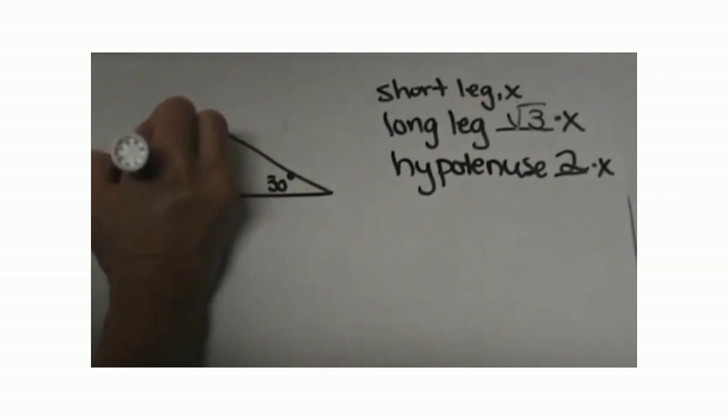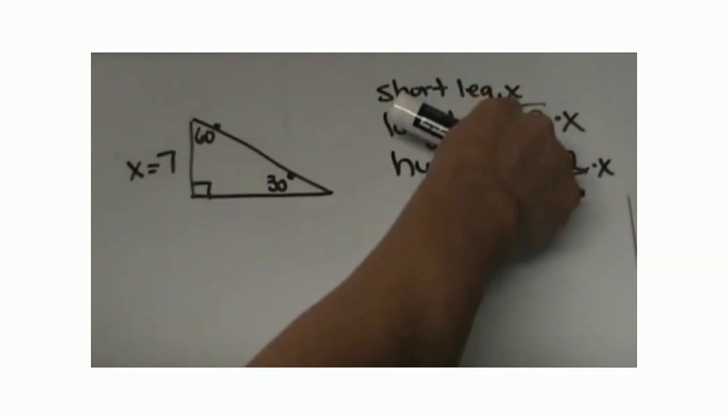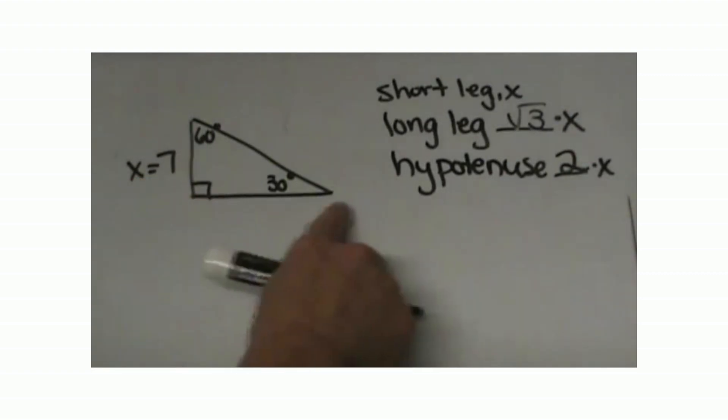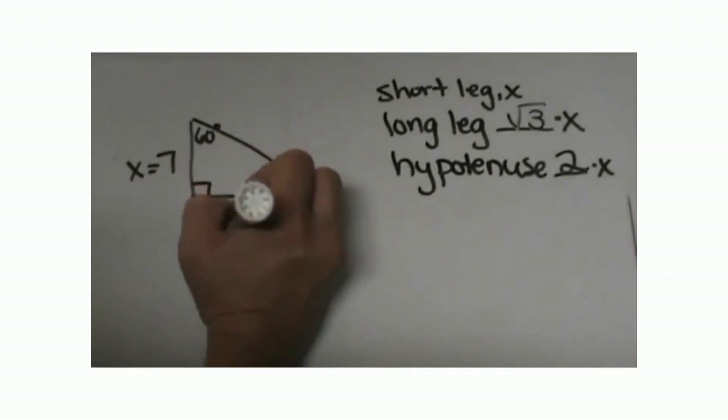We are going to label that x, just like the rule as x. Label the short leg equal to x. Label the long leg. The long leg is this leg over here. Remember it is x root 3.